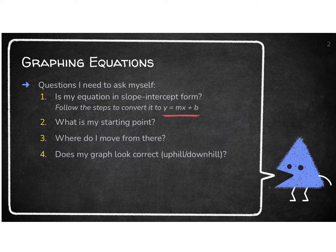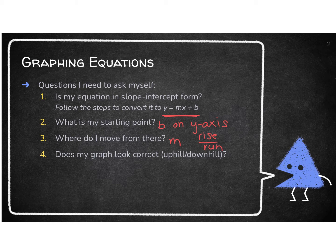From there, you are starting with your b value on your y-axis. And then you are moving your m value. Remember that is rise over run, so you are going to go up and down over left and right. And then you always verify at the end — does my graph look correct? Am I increasing when I am supposed to? Increasing when it is a positive slope, and decreasing when it is a negative slope.